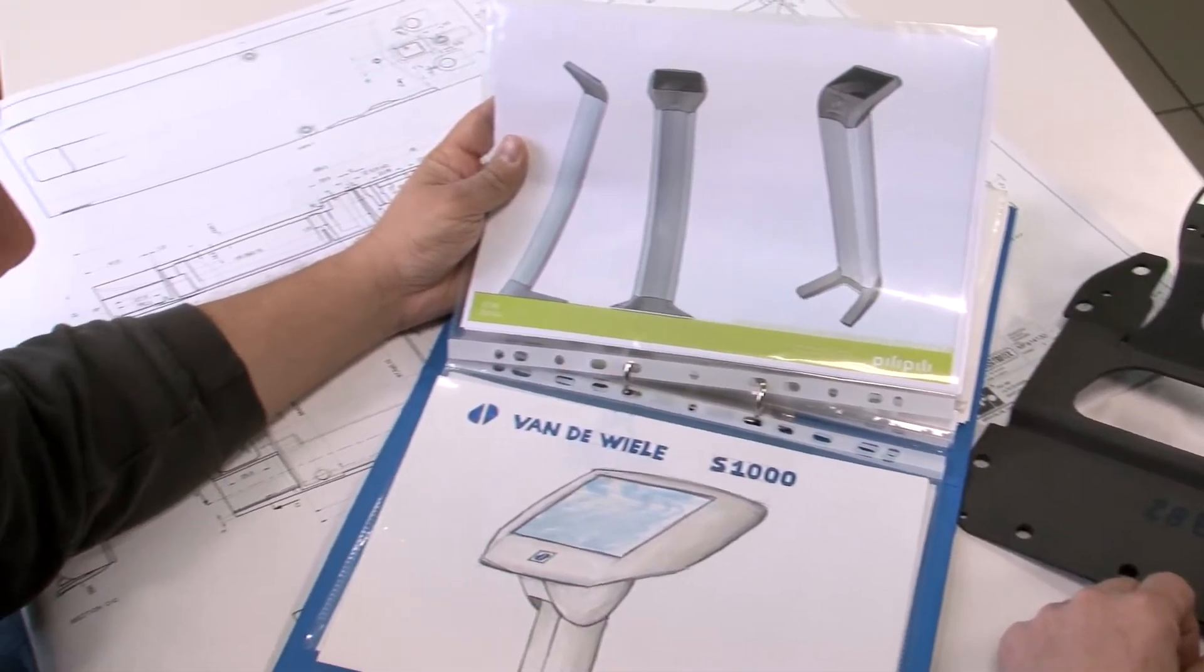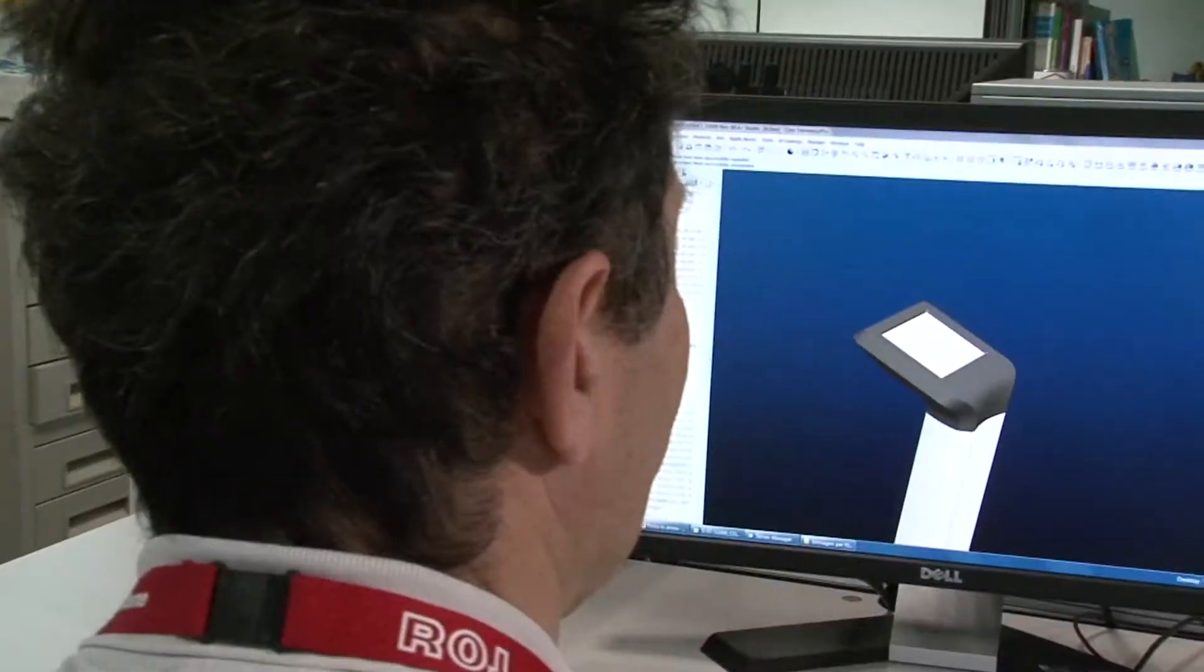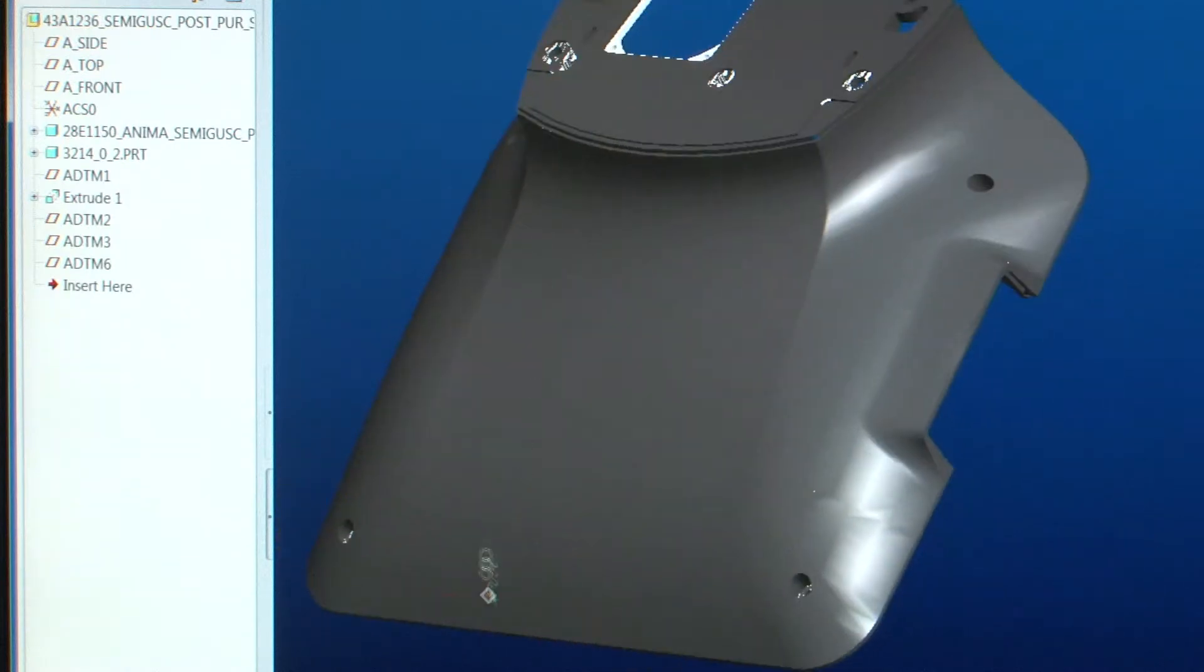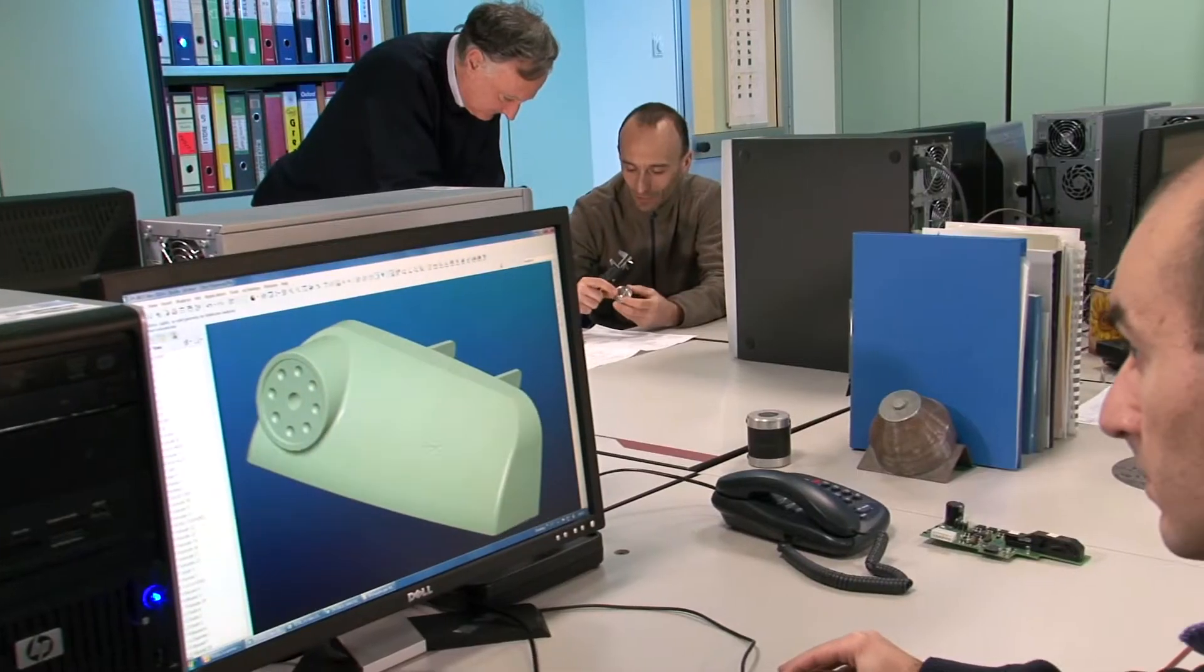ROE develops a wide range of electromechanical equipment in close relationship with other research and development departments of the Vandewiele Group in order to exceed the ever-growing demands of the textile industry.